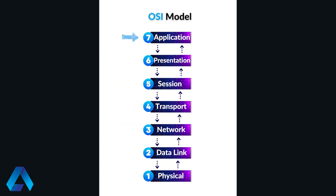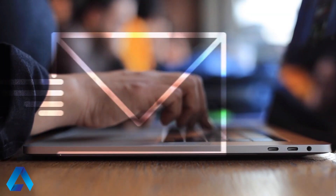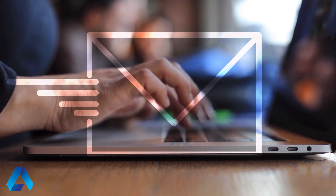Lastly, Layer 7, application. This is the layer that we're most familiar with, and it provides access to network services for applications such as email, file transfer, web browsing, and social media, to name a few. The next time you compose an email to send to a friend, think of the application layer.